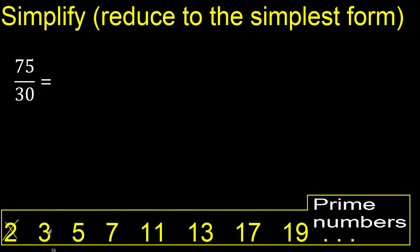Divided by 3 — yes, 75 can be divided by 3, and 30 divided by 3. Because the digit sum 7 plus 5 is 12, and 12 can be divided by 3, therefore 75 can be divided by 3.